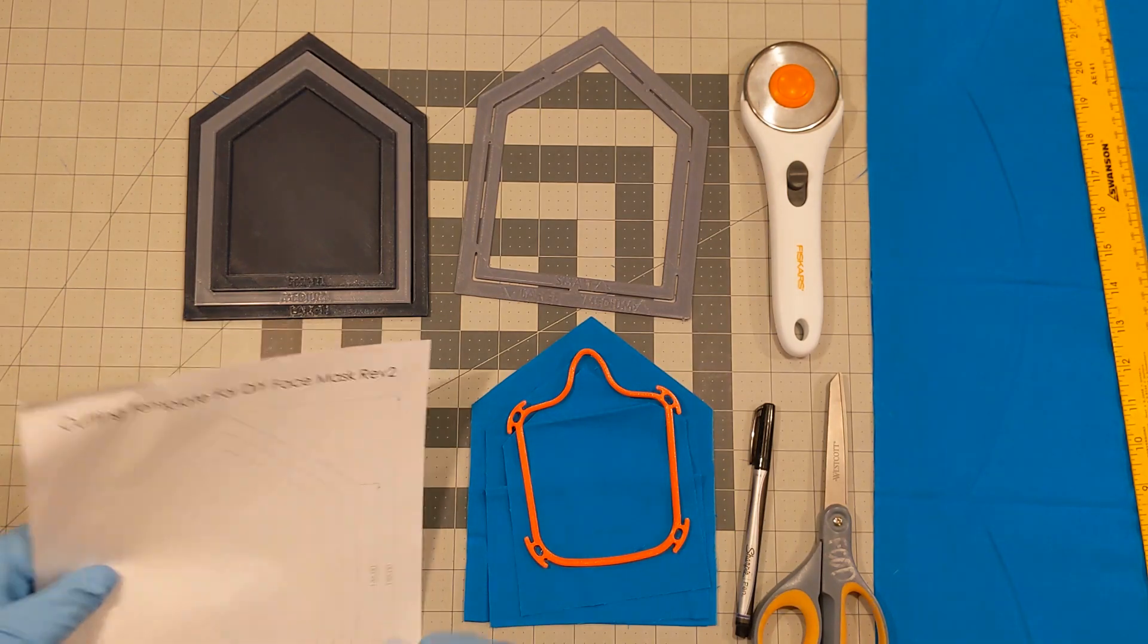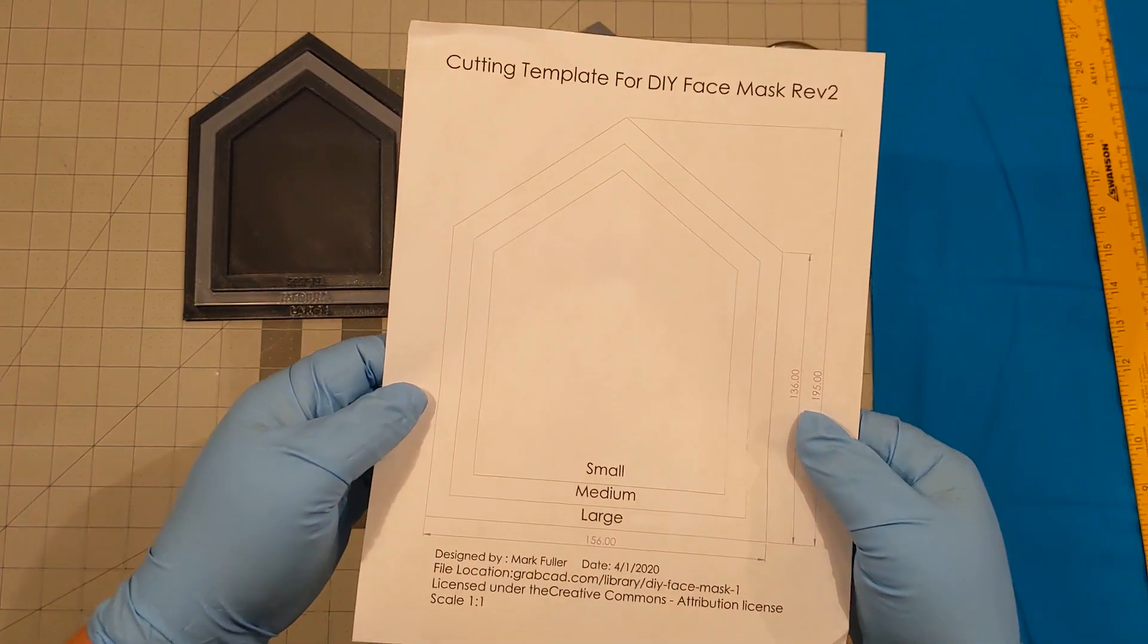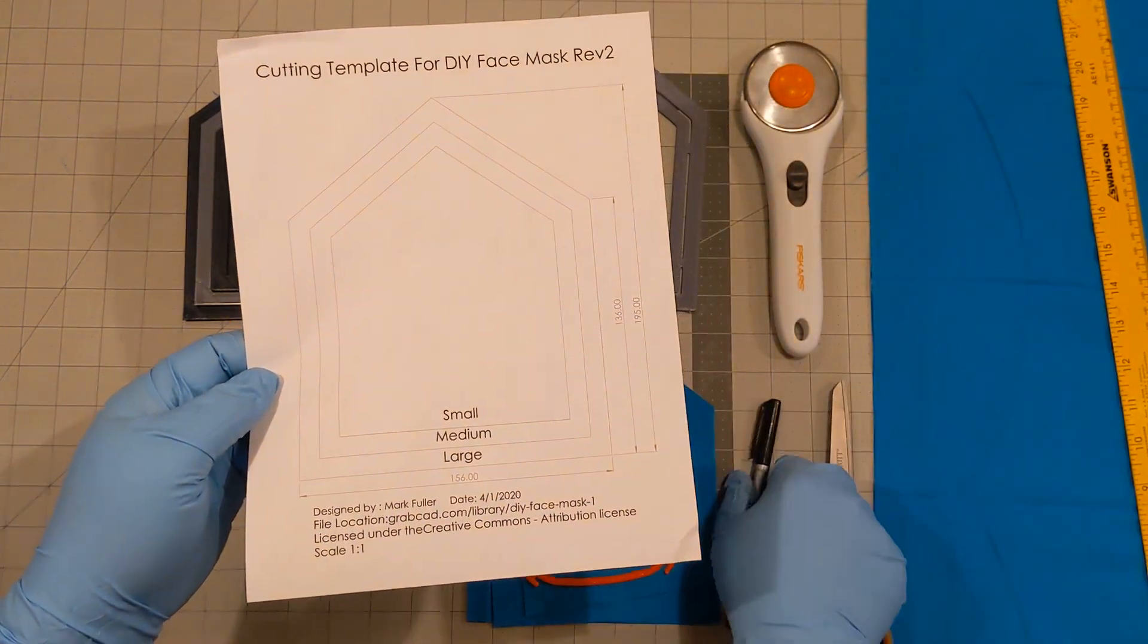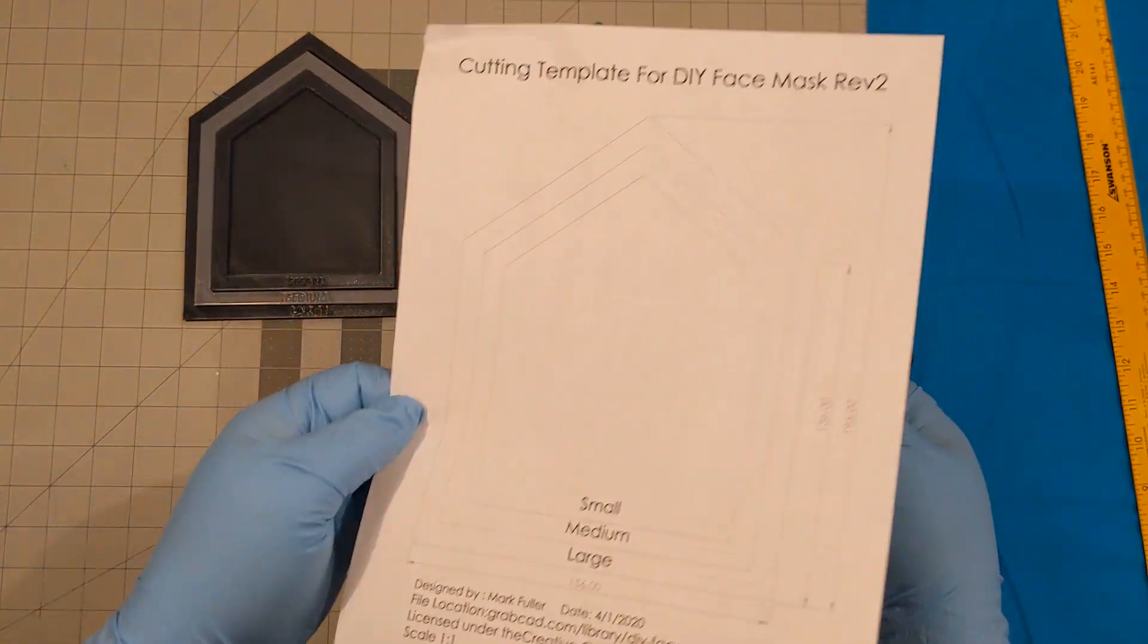The second way is if you don't want to print this out and somebody gave you a frame, you can print out this PDF template, cut it out the size that you want, trace and then cut out your filter material. So that's the second way.